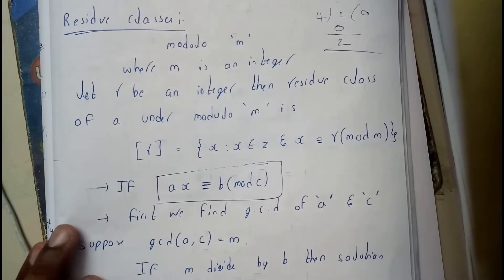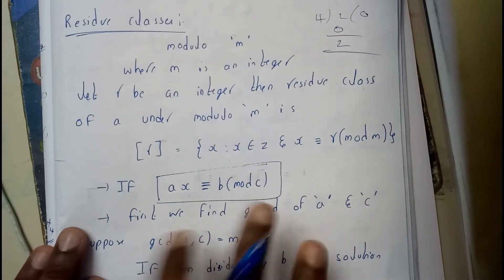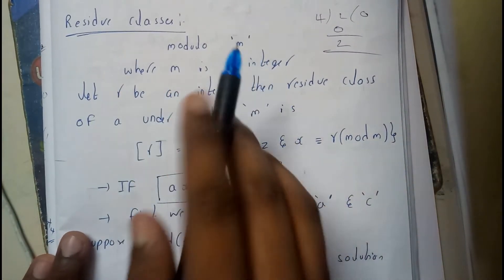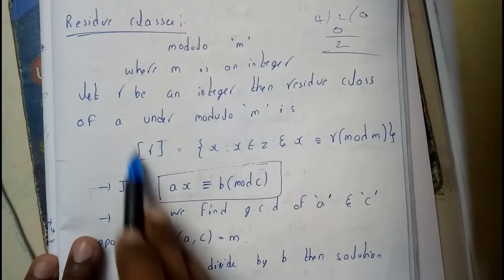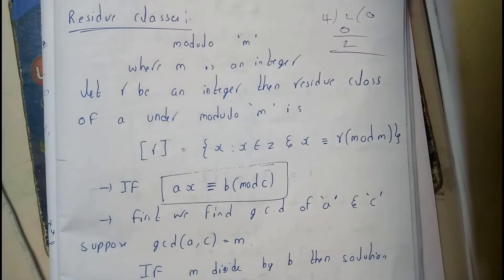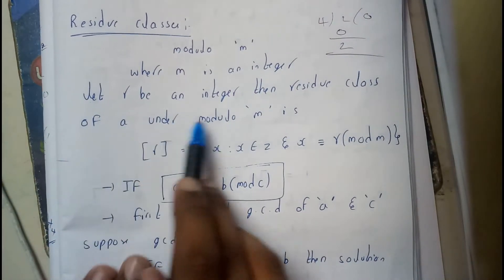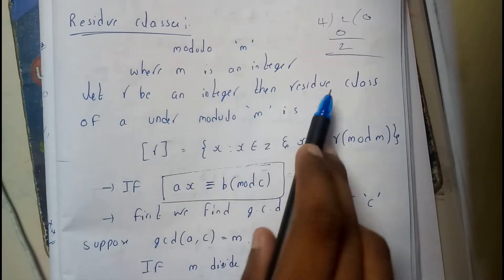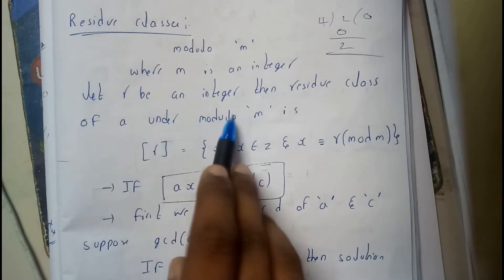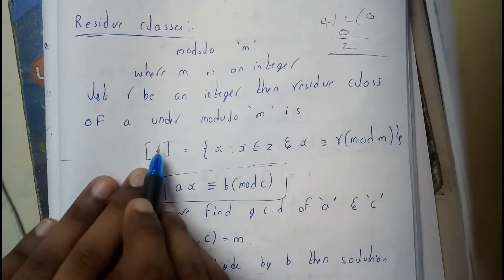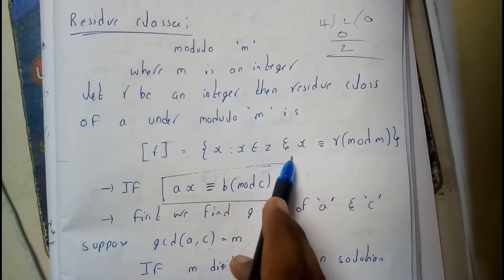So where m is an integer, mod m where m is an integer. Okay, you'll be not finding that there, don't worry, be cool. Let r be an integer, then residue class under the modulo m is residue class X such that X belongs to Z and X triple equals r mod m.